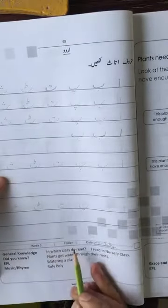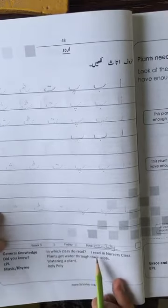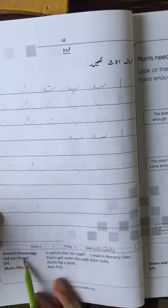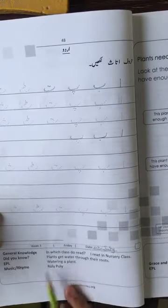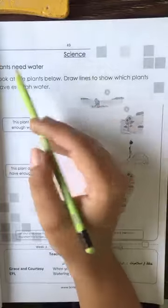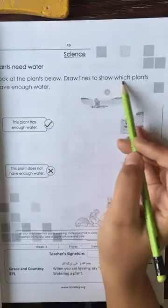In which class do you read? I read in nursery class. Did you know plants get water through their roots? The next page is 49, subject Science. Plants need water. Look at the plants below, draw the line to show which plants have enough water.